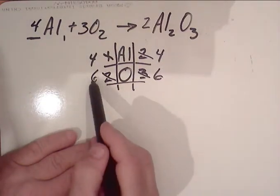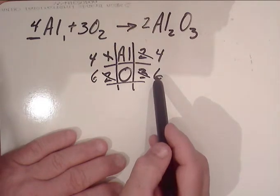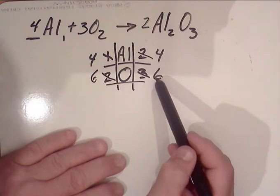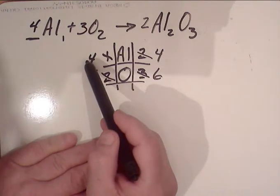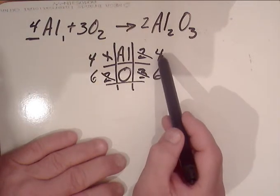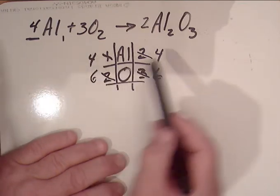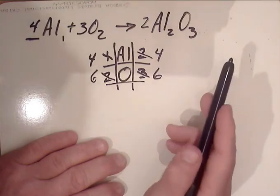Now we are balanced because we have six oxygens on the reactant side, six on the product side, four aluminums on the reactant side, and four aluminums on the product side. It's balanced.